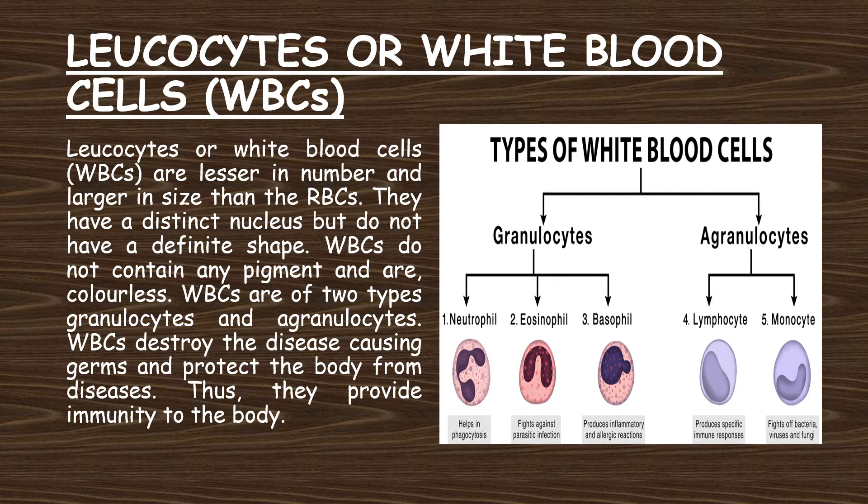Leukocytes or white blood cells are lesser in number and larger in size than the RBCs. They have a distinct nucleus but do not have a definite shape. WBCs do not contain any pigment and are colorless. WBCs are of two types: granulocytes and agranulocytes.